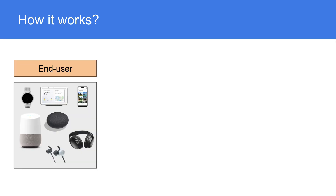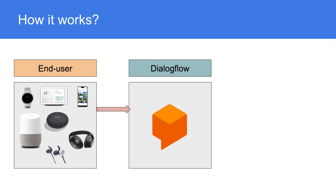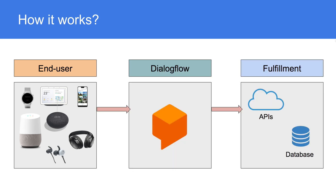So how does it work? User input will be generated through various voice mediums. It will be passed on to the Dialogflow agent, and the agent will send this request to a webhook service. Once the webhook service has updated data, it will send it back to the Dialogflow agent, and the agent will pass this information to the end user.